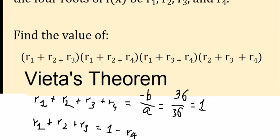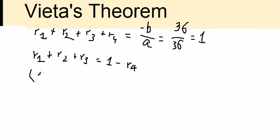You can do similar technique for the three factors here and you will get (1 - r₁) multiplied with (1 - r₂), (1 - r₃), and (1 - r₄).